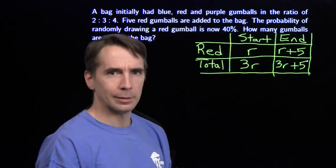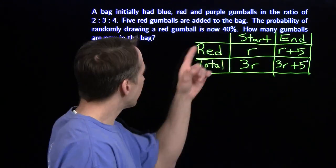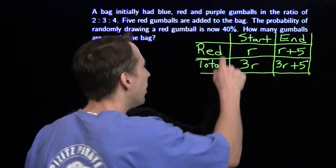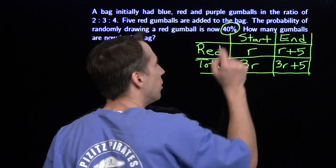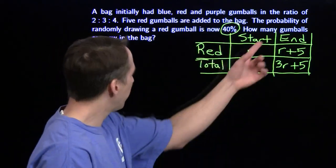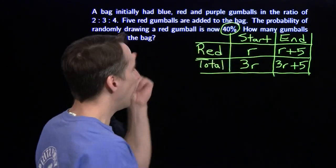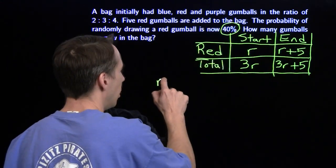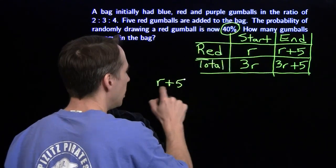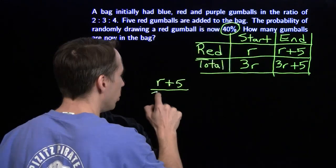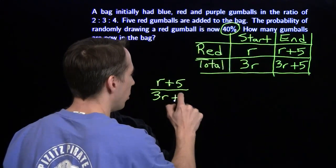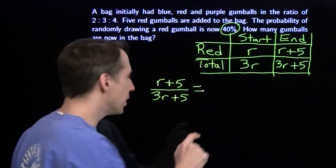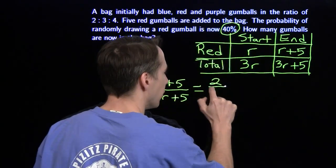Whenever I'm a little bit stuck, I like to look back at the problem and look for information that I haven't used yet. I haven't used this 40 percent. The probability of drawing a red gumball at the end is the number of red gumballs divided by the total number of gumballs. We're told that this probability is 40 percent, and I'm going to write that as a fraction, 2/5.